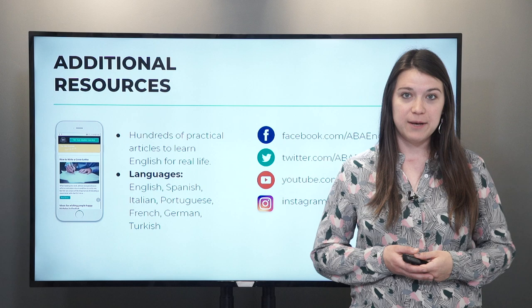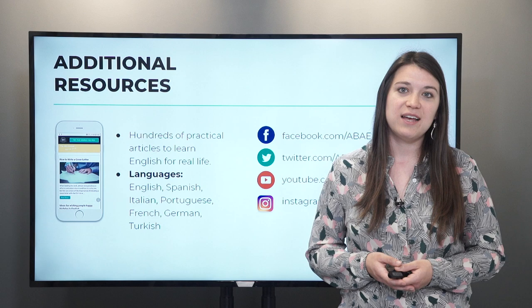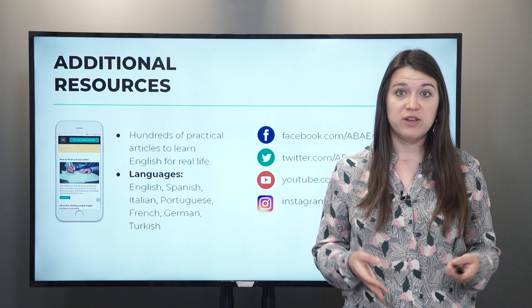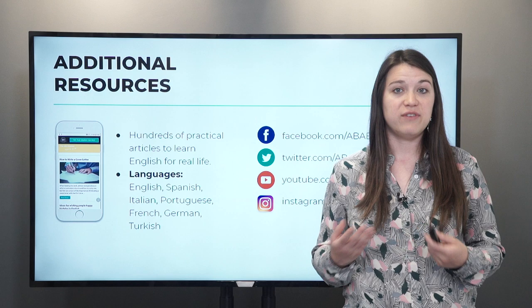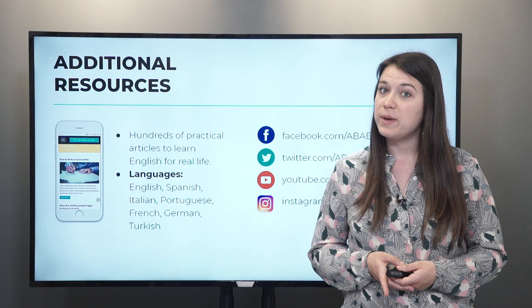I want to tell you more about our course here at ABA. If you want to practice your English even more, you can sign up for our course, which is available in web form and in app form — you can study from your PC, Mac, smartphone, or tablet, and your progress is saved on all of these devices. Our course consists of 144 units. Each unit starts with a short film, then a video class explaining the grammar, and then you complete different exercises to practice all of your skills.